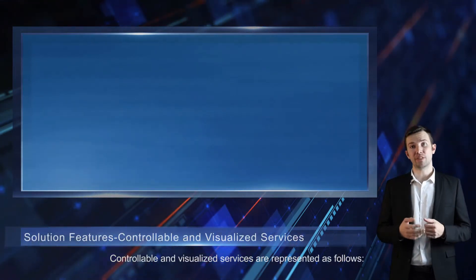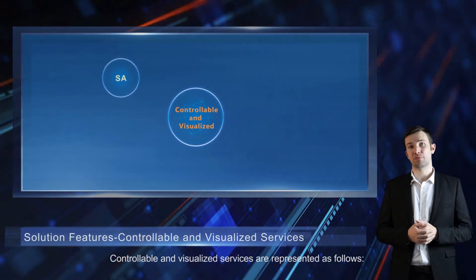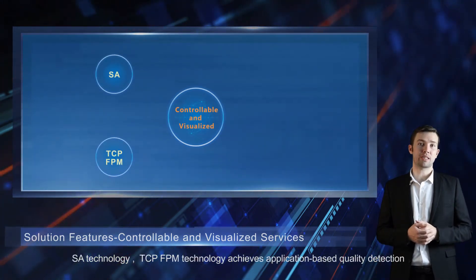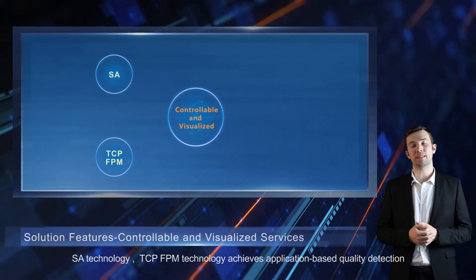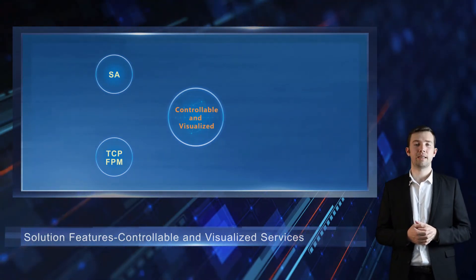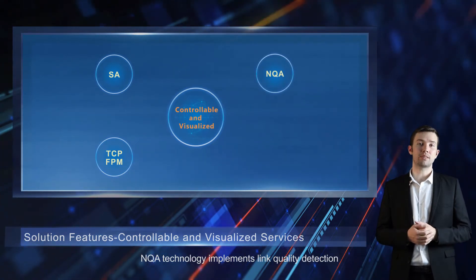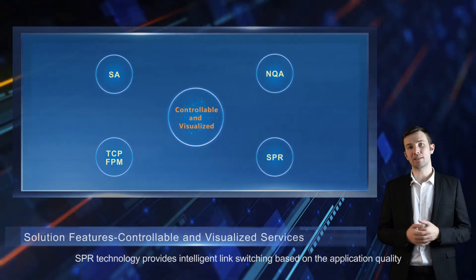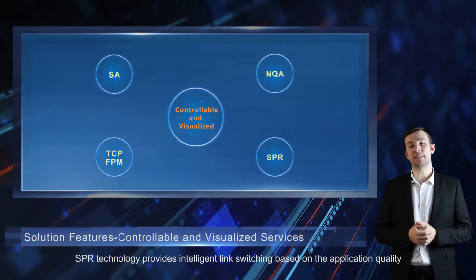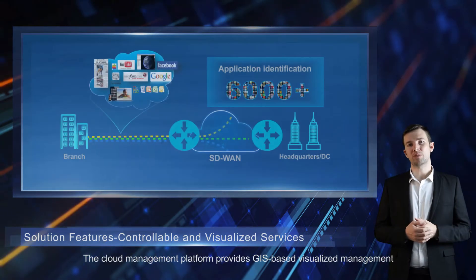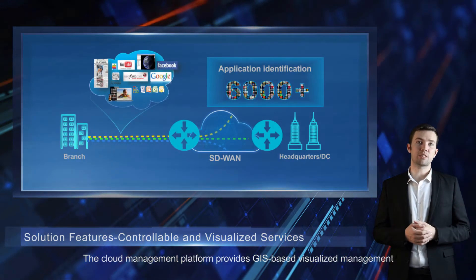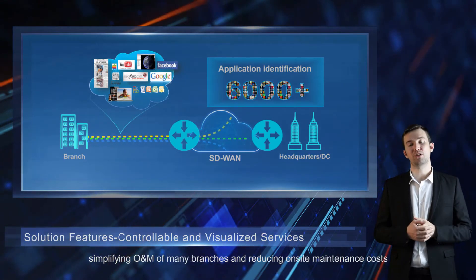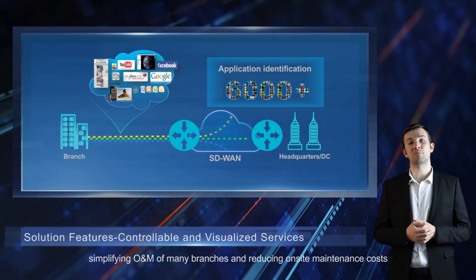Controllable and visualized services are represented as follows. SLA and TCP-FPM technology achieves application-based quality detection. NQA technology implements link quality detection. SPR technology provides intelligent link switching based on application quality. The cloud management platform provides GIS-based visualized management, simplifying O&M of many branches and reducing on-site maintenance costs.